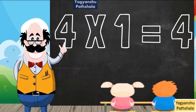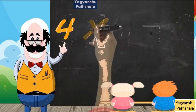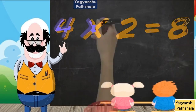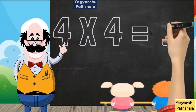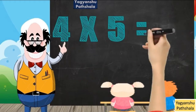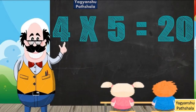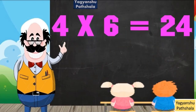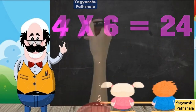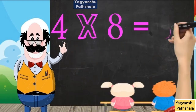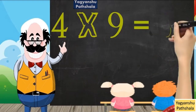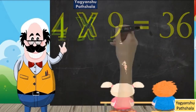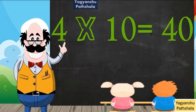4 into 1 is 4. 4 into 2 is 8. 4 into 3 is 12. 4 into 4 is 16. 4 into 5 is 20. 4 into 6 is 24. 4 into 7 is 28. 4 into 8 is 32. 4 into 9 is 36. 4 into 10 is 40.